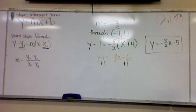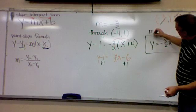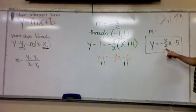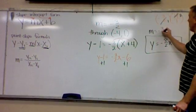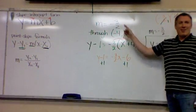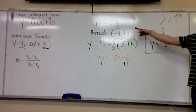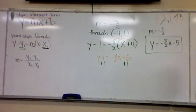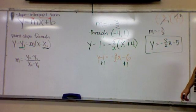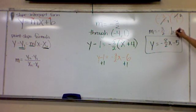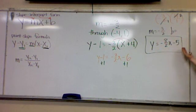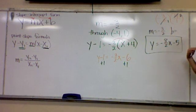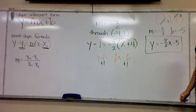This is in slope-intercept form. You should be able to identify fairly quickly: what's the slope of this thing? Negative 3 halves — and that should be the same as what I started with. What's the y-intercept? Negative 5. The y-intercept is negative 5.